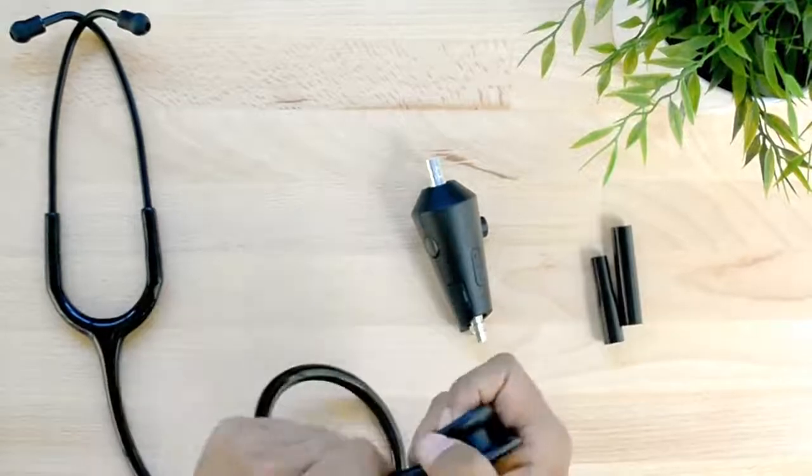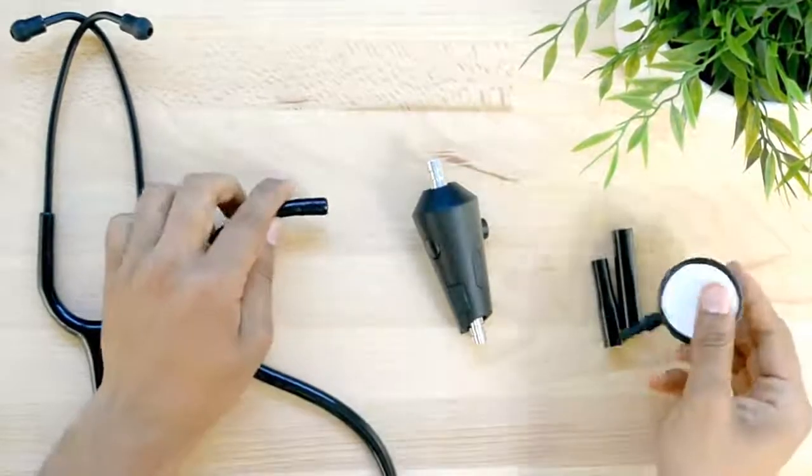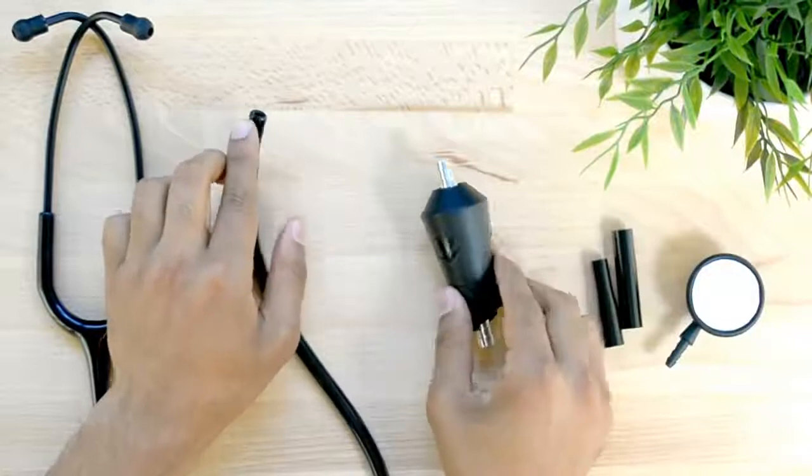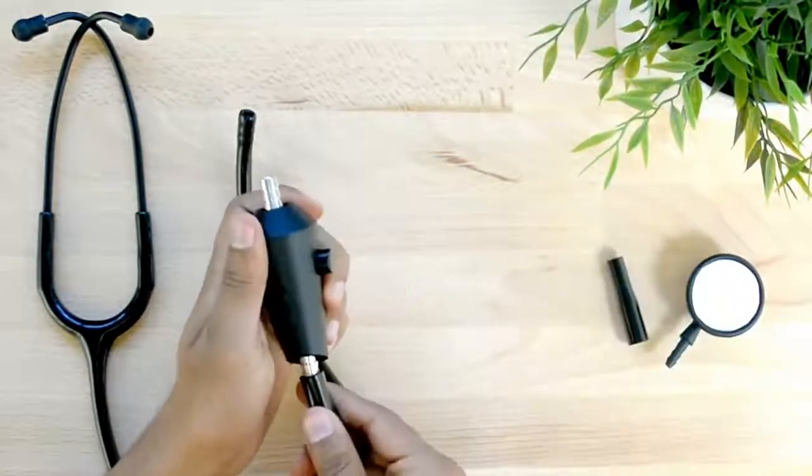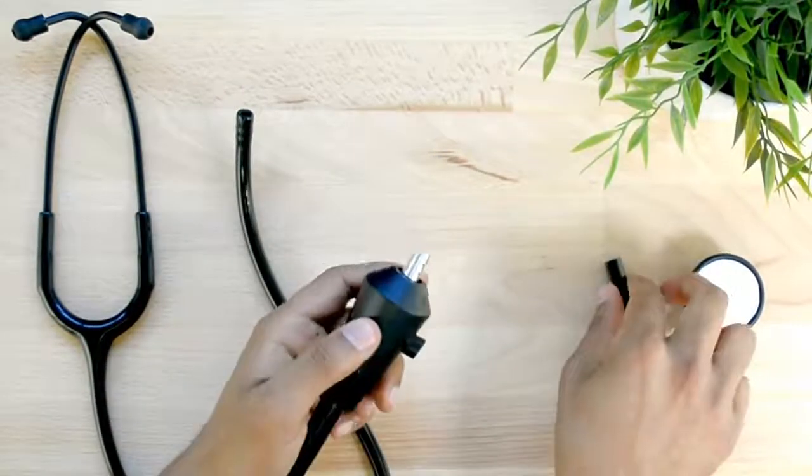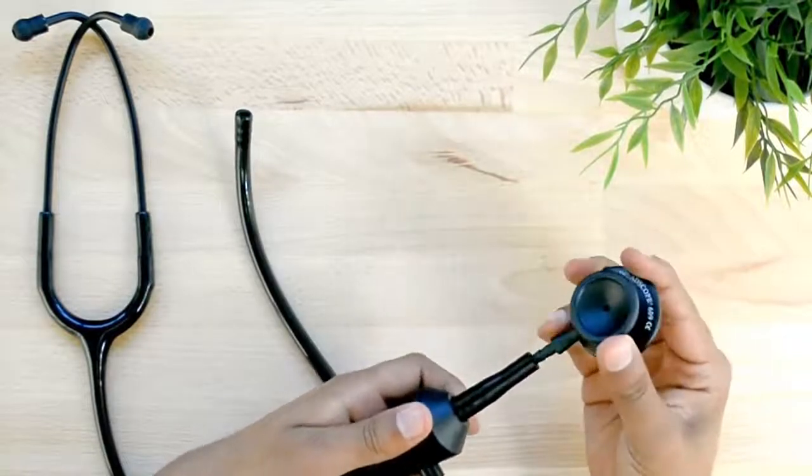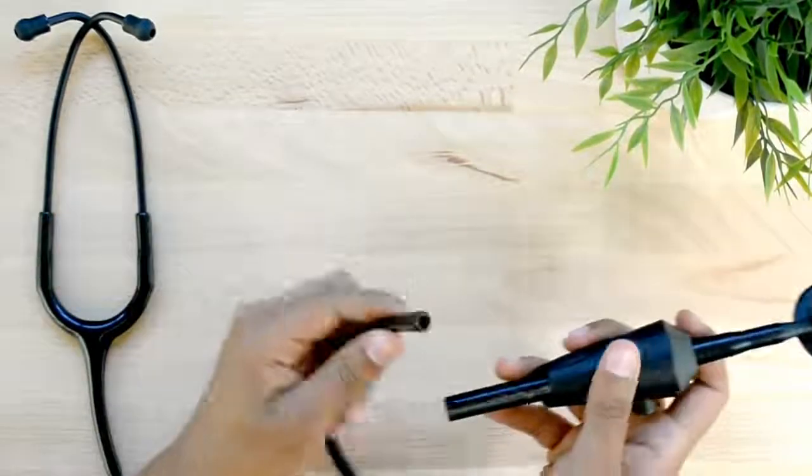First, remove the chest piece of the stethoscope. This may require some force. Then attach the large adapter to the bottom of the ECHO-Core and the small adapter to the top. Now press the chest piece into the small adapter and insert the stethoscope tubing into the large adapter.